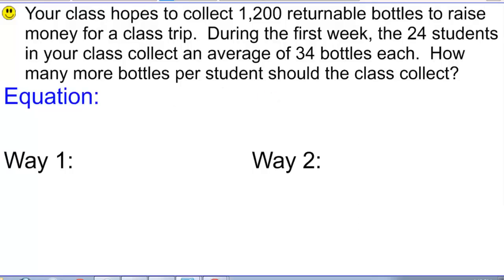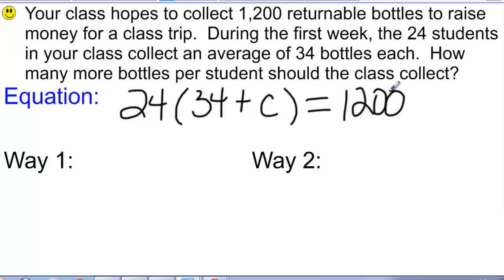Your class hopes to collect 1,200 returnable bottles to raise money for a class trip. During the first week, the 24 students in your class collect an average of 34 bottles each. How many more bottles per student should the class collect? What you need to notice here when you're writing an equation is there are 24 students who have each already collected 34 bottles. Plus, we want to know how many more each student has to collect, so I'm going to write it as 24 times the quantity 34 plus c equals 1,200.